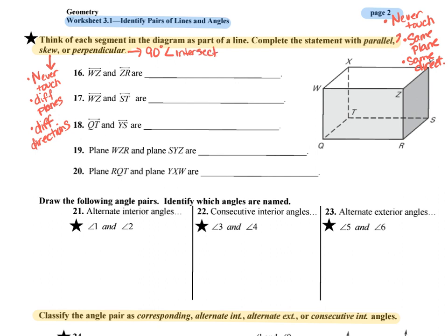When we're doing problems like this where we have a box, the best thing to show your work is to actually draw these lines on the picture. Then we can look for the 90-degree angle between them, see if they touch, and see if they go the same direction or different directions.